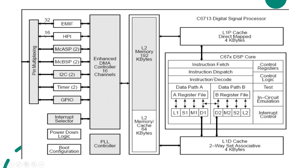The dispatch unit dispatches instructions to the decode unit, and the decode unit dispatches to the execution units. There are two register files with 16 registers each, separate functional units for addition, logical operations, and multiplication, and separate connected ports.